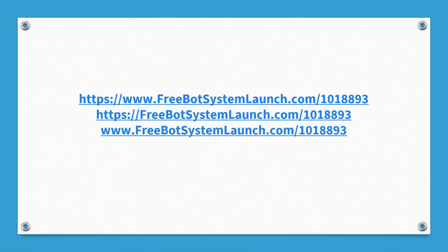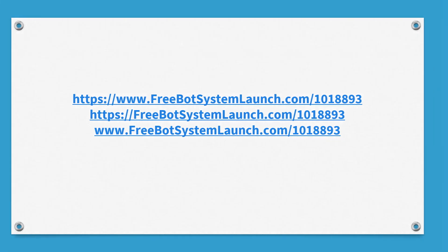Your referral link is going to look something like this — yours will have a different set of numbers than mine. Once again, this is a test account for training purposes only. You can take the WWW out of there if you don't like that, or just run HTTPS, or run 'freebotsystemlaunch.com' forward slash your unique inviter number. It's totally up to you — I'm just showing you the options.